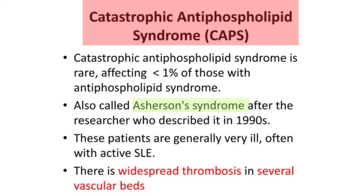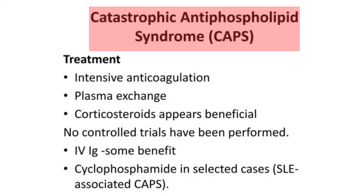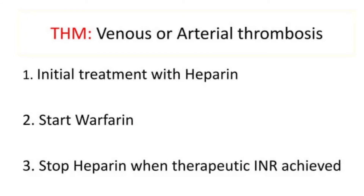Catastrophic antiphospholipid syndrome is a rare entity affecting less than 1% of those with APS, also called Asherson's syndrome. These patients are generally very ill, often with active SLE, and present with widespread thrombosis in several vascular beds along with multi-organ failure due to microvascular thrombotic activity. Treatment includes intensive anticoagulation plus plasma exchange, corticosteroids, and IVIG if plasma exchange is unavailable.